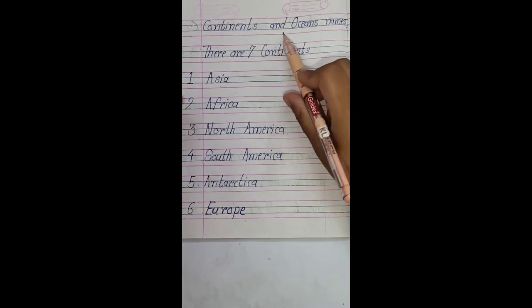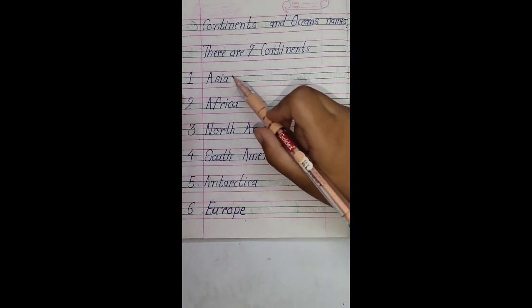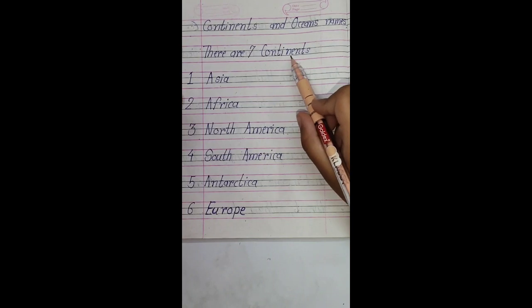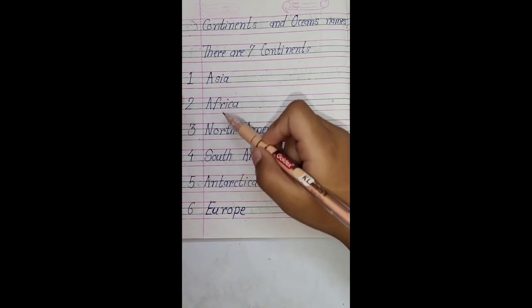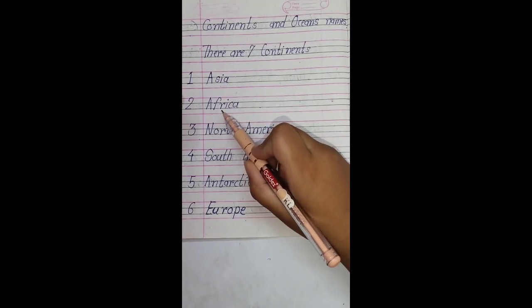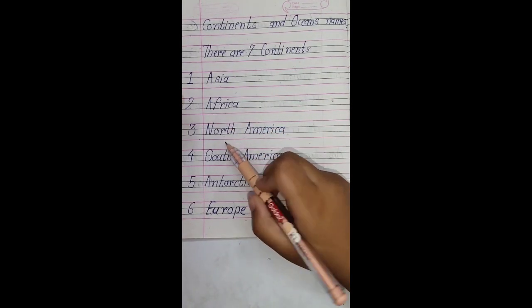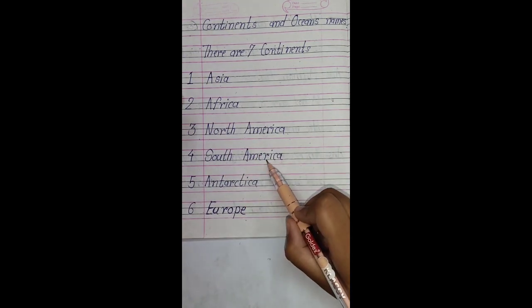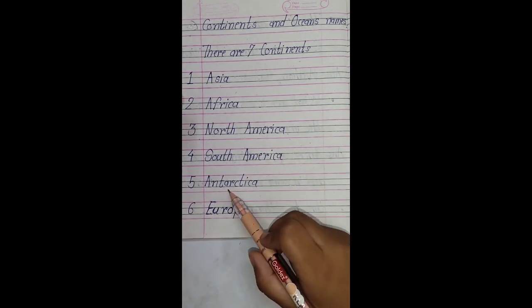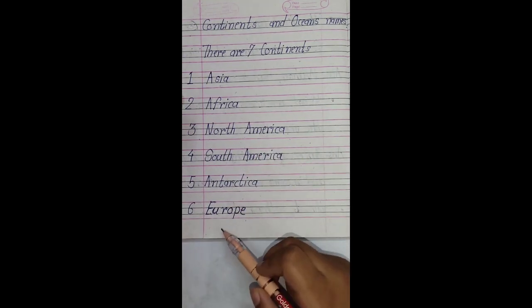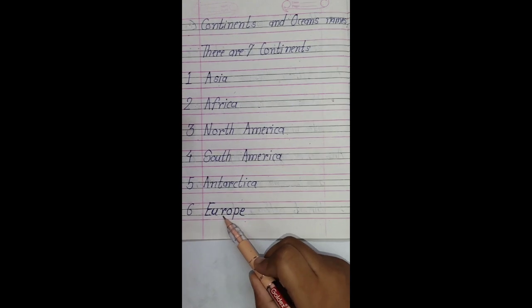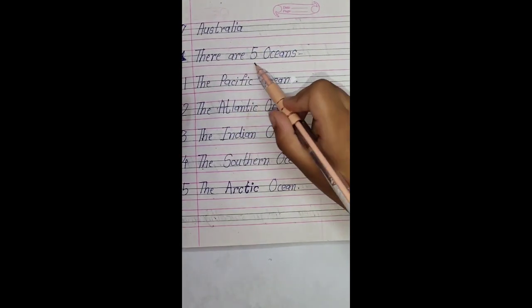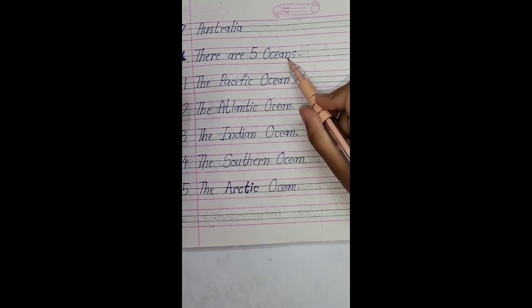Continents and oceans names. There are 7 continents: Asia, Africa, North America, South America, Antarctica, Europe, Australia.